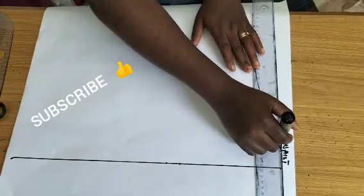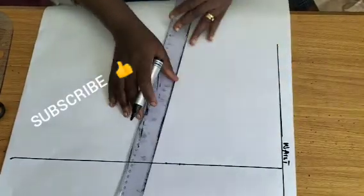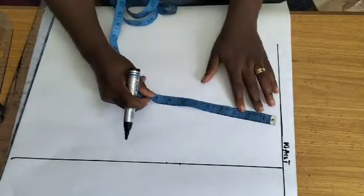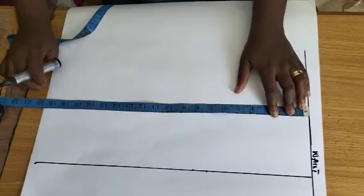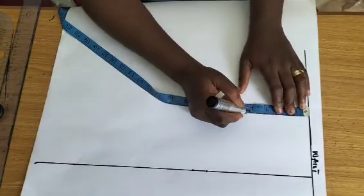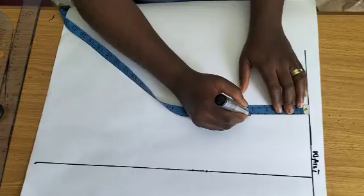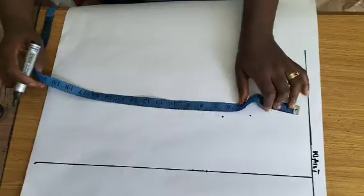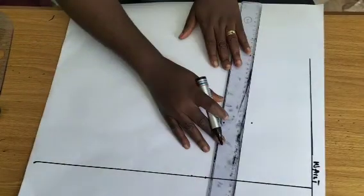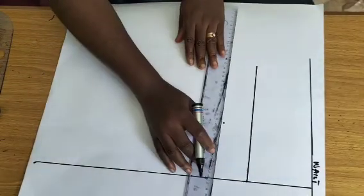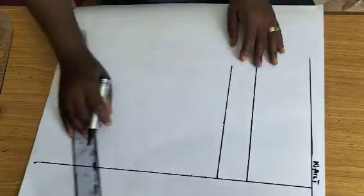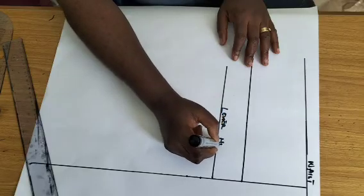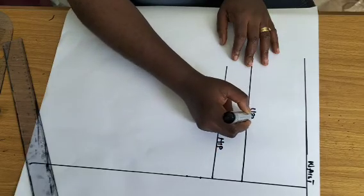I'm going to measure from this point my hip. First of all I will take my vertical measurements. I'm taking my vertical measurements for the hip. This is just a half scale drafting. The lines I just made now, this is my lower hip and this is my upper hip.